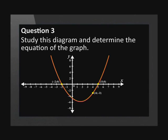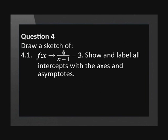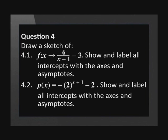This question provides us with the information that we need to apply to find the equation. Study this diagram and determine the equation of the graph. Draw a sketch of f where x is mapped onto 6 over x minus 1, minus 3. Show and label all intercepts with the axes and asymptotes. Then sketch p of x equals negative 2 to the power of x plus 1, minus 2. Show and label all intercepts with the axes and asymptotes.